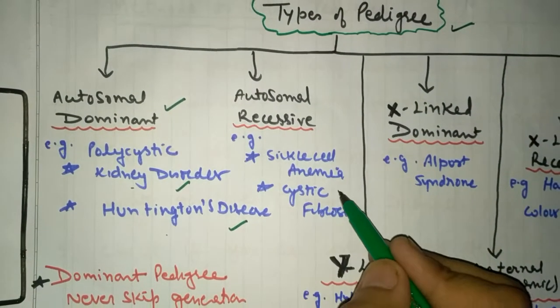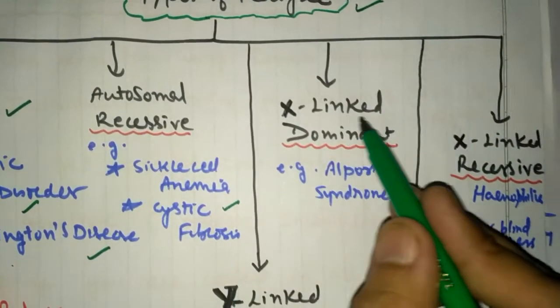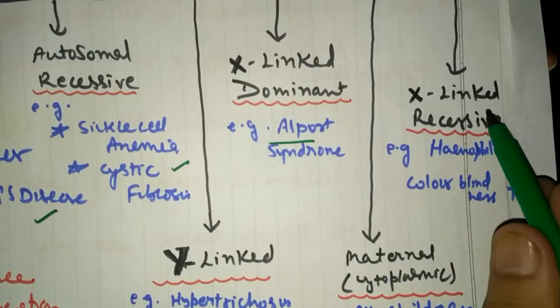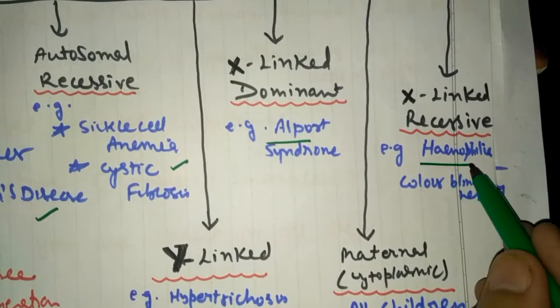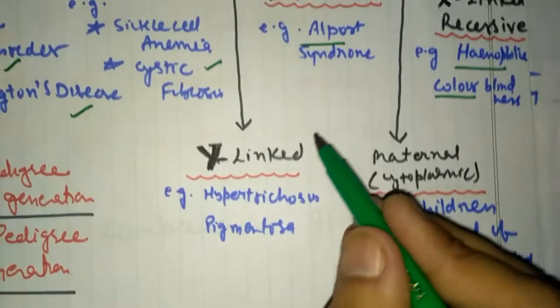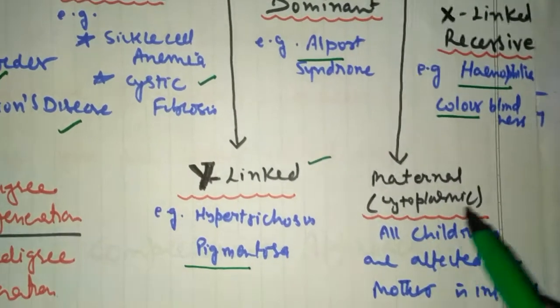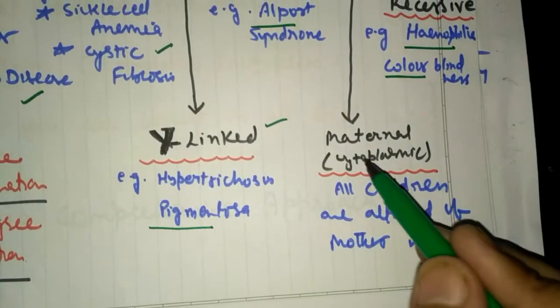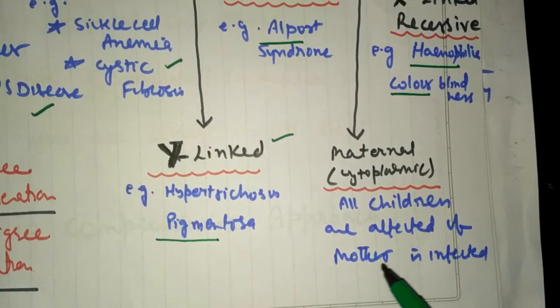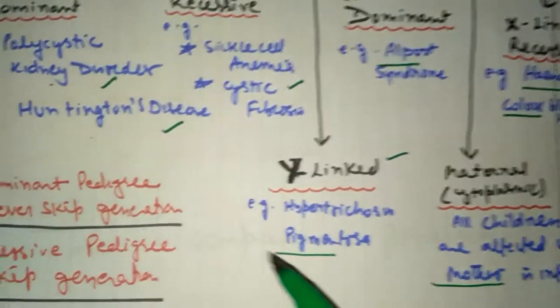Next is X-linked dominant, like Alport syndrome. Next is X-linked recessive - hemophilia and color blindness. Next type is Y-linked, retinitis pigmentosa disease. And the last is maternal or cytoplasmic. It occurs when all the children are affected if the mother is infected.